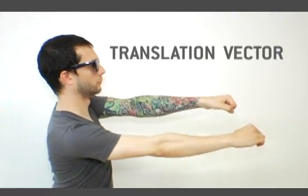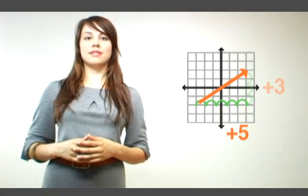In math, this is called translation. One way to indicate a translation is with an arrow called the translation vector. This translation vector tells you to move your point five units to the right and three units up.